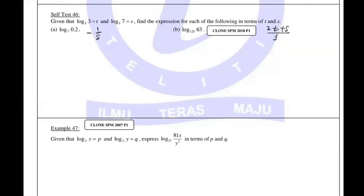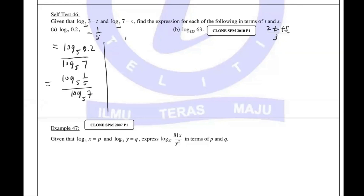Now we need to change the base to base 5, since all the terms involve base 5. Change to base 5. 0.2 stays on top, 7 stays down. Now 0.2 is actually 1 over 5, which is 5 to the power negative 1. Log base 5 of 7 is S. So the answer is negative 1 over S.